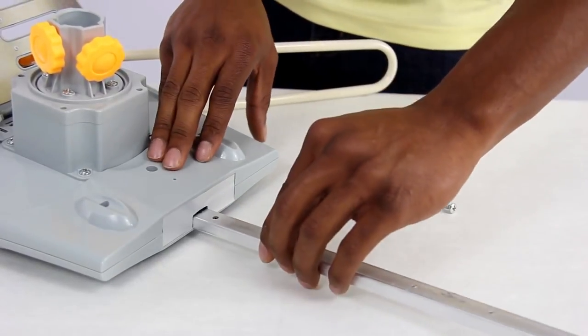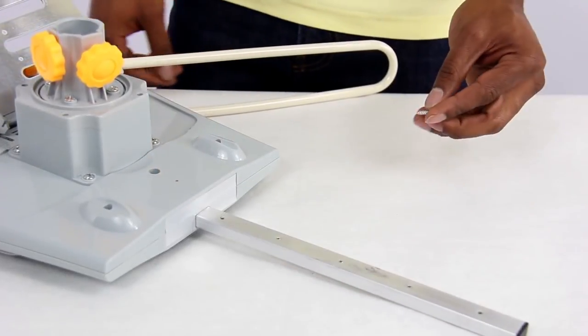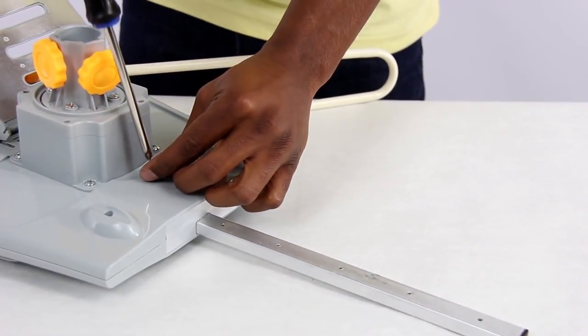Next, insert the square pipe into the front center of the main unit. Use a single silver screw to secure it in place.